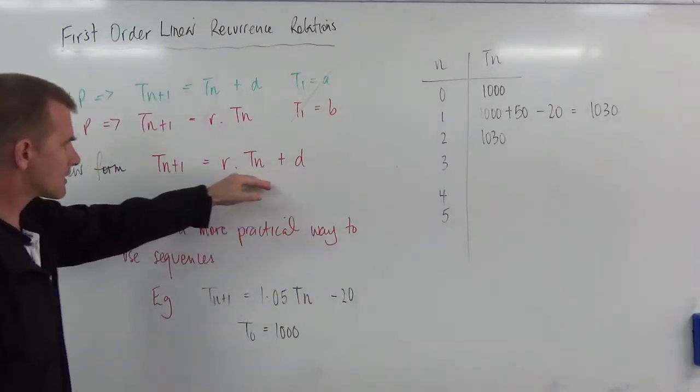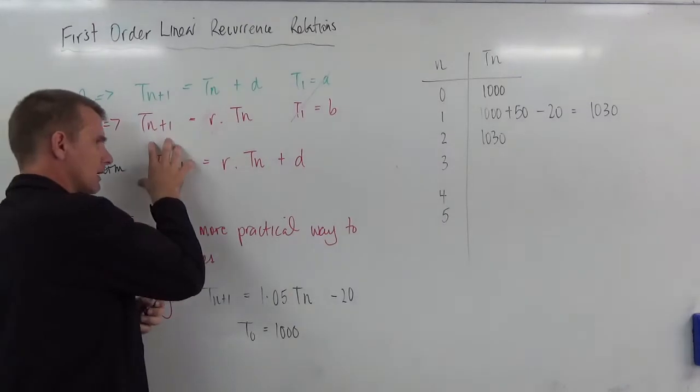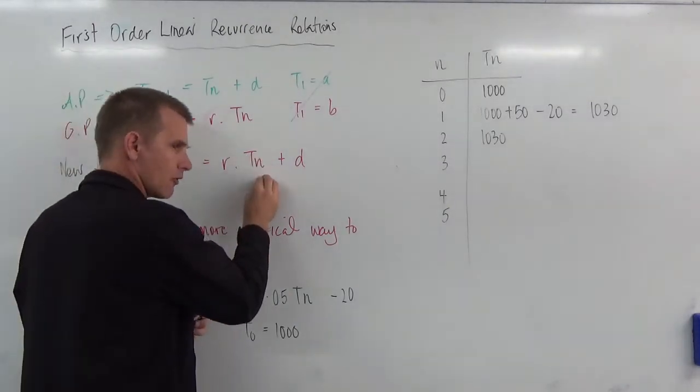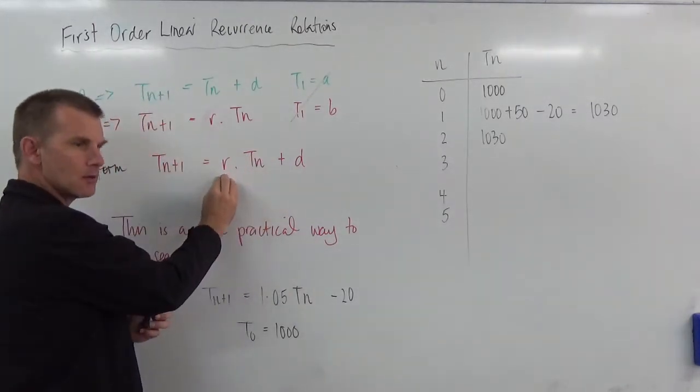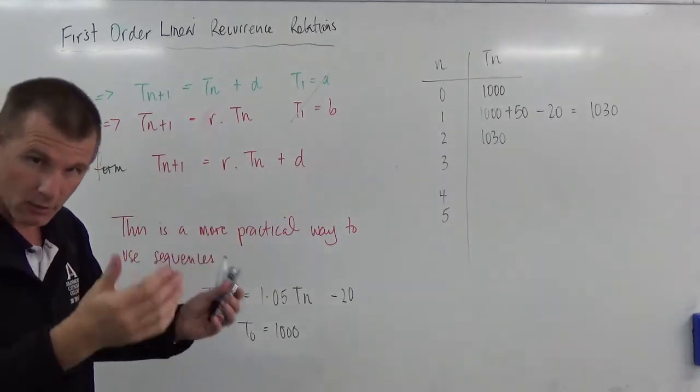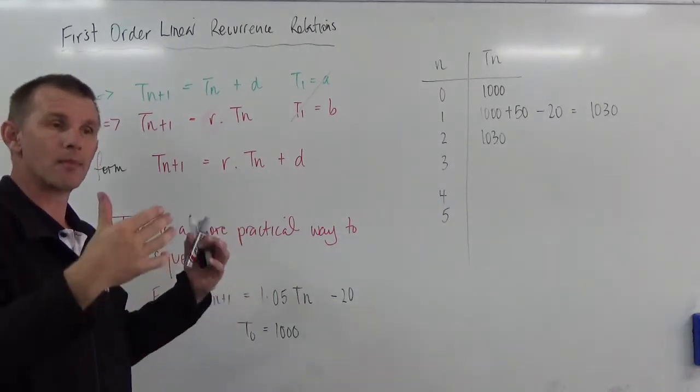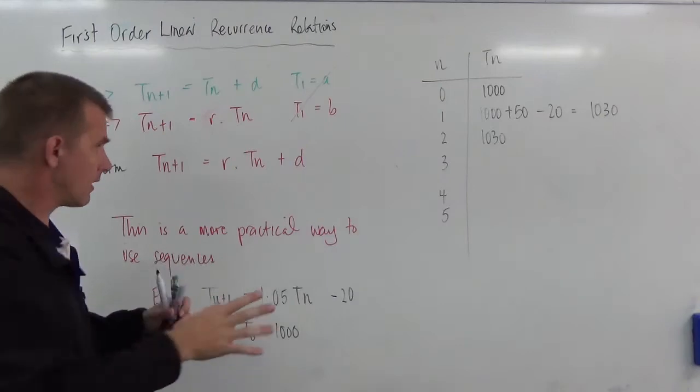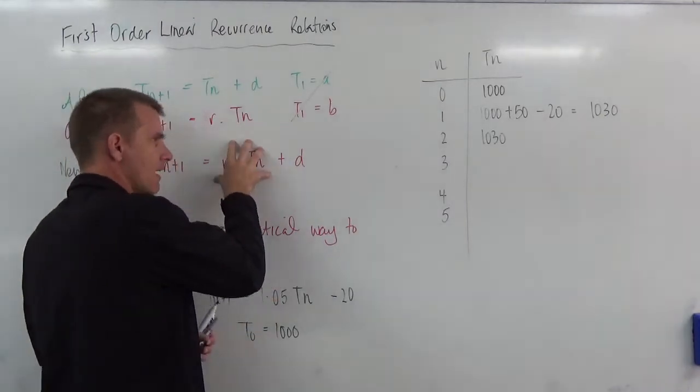So this formula here says that to get to the next term, I take the current one and multiply by something. That might be an increase, a growth, or it might be a decay, a decrease. Could be either.